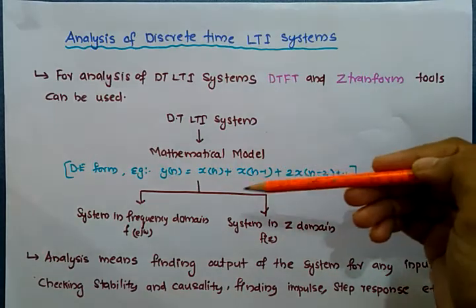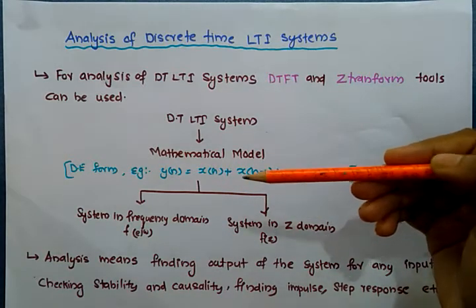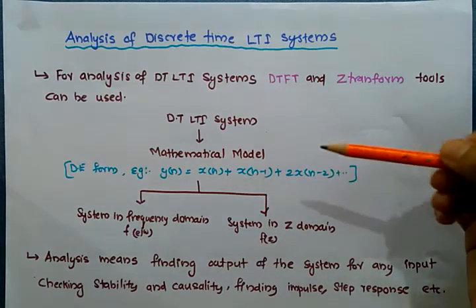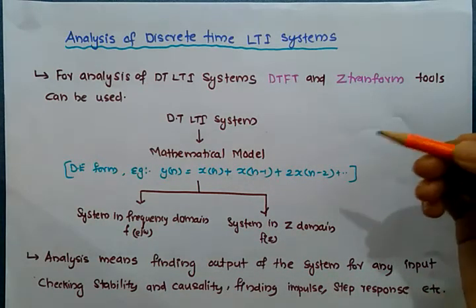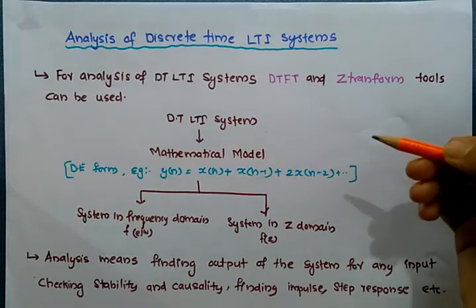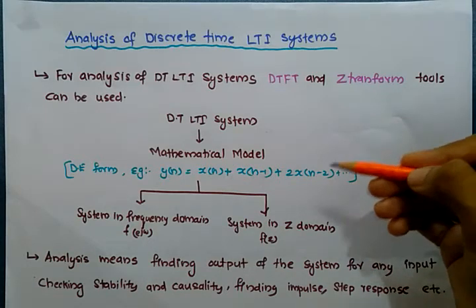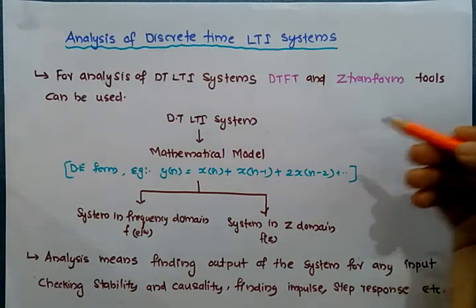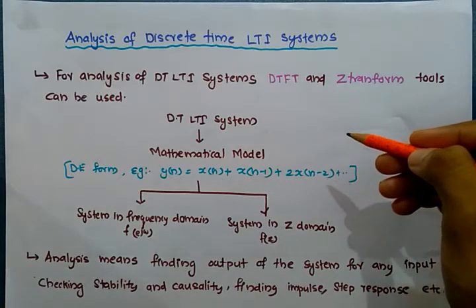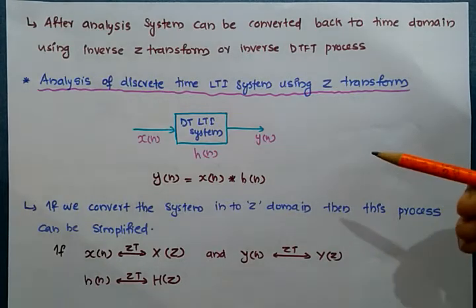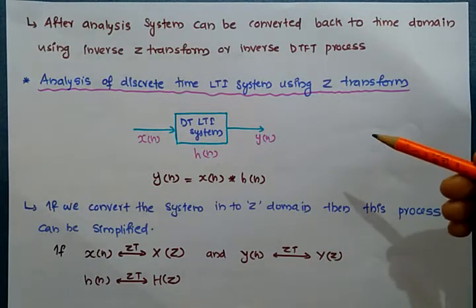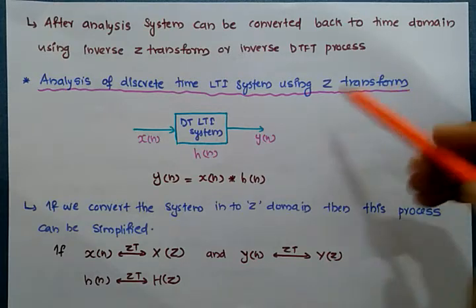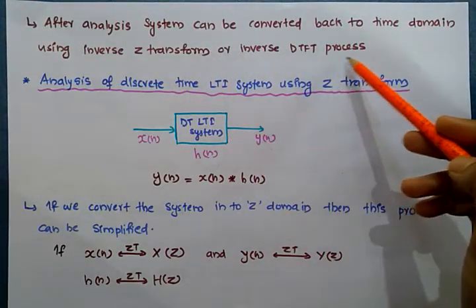If you want to analyze a system, we can verify the output of the system. If you want to see whether the system is stable and causal, you can examine the impulse responses and step responses. After analysis, we have to convert the system back into the time domain. For that purpose, inverse Z-transform or inverse DTFT can be used.